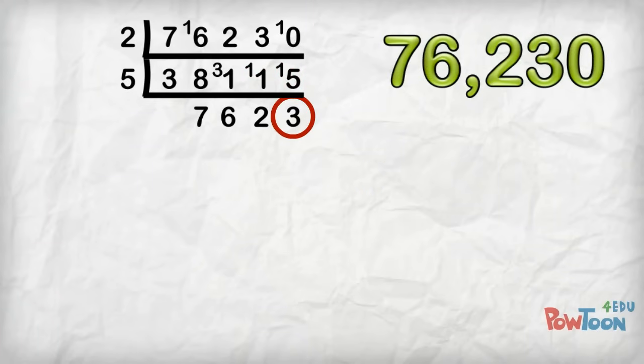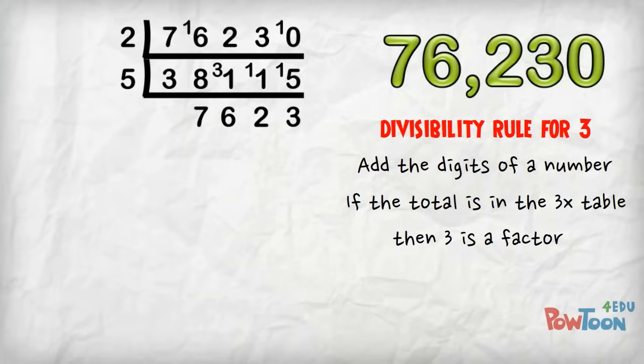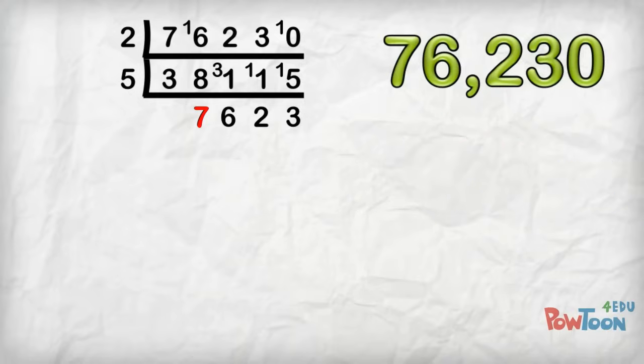This answer ends in 3, so we can't divide by 2 or 5. The divisibility rule for 3 tells us add the digits of a number. If the total is in the 3 times table, then 3 is a factor. Let's try it. 7 and 3 is 10, plus 6 is 16, plus 2 is 18, which is in the 3 times table, so 3 is a factor.